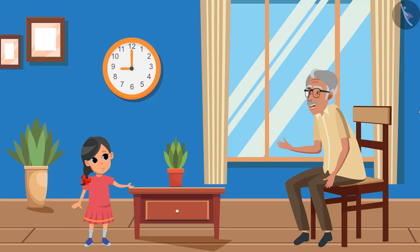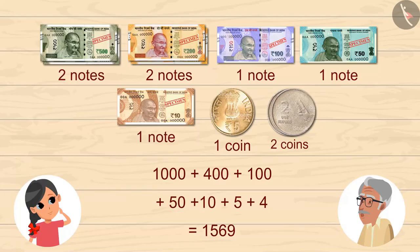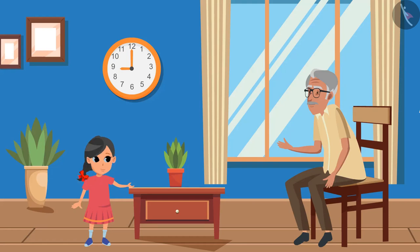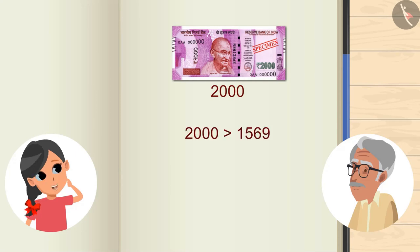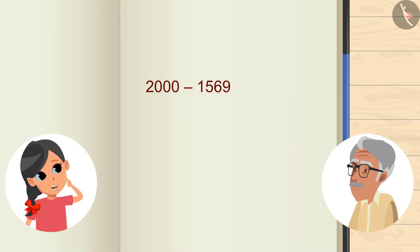But we have used so many notes in this. Can we make the whole amount of 1569 by using fewer notes? Can we use a 2000 rupee note for this? But Grandpa, it's more than 1569. How much more is it? If we subtract 1569 from 2000, we will be left with 431 rupees. Oh wow Grandpa, it worked with only one note!